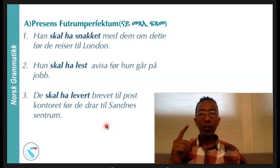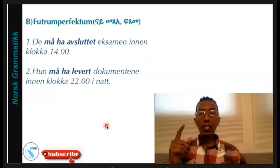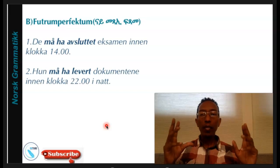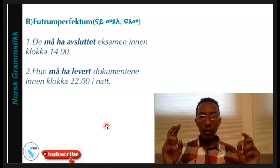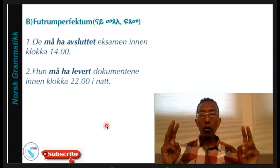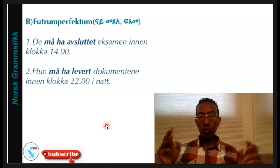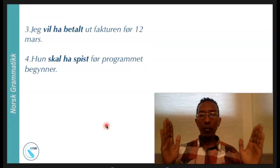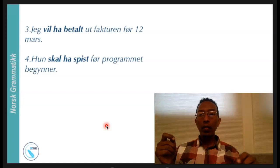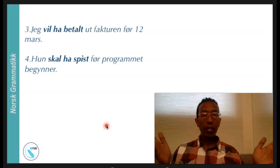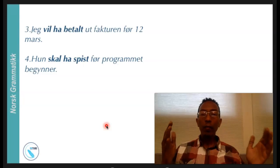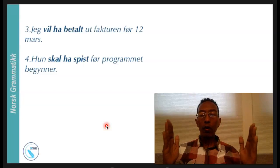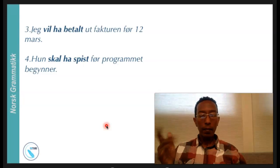This is one usage of present future perfectum in Norwegian grammar. The second usage is when you have a restricted time point. For example: 'De må ha absolutt gjort eksamen innen klokka to' — they should have finished the exam by two o'clock. Another: 'Man må ha levert dokumentet innen klokka to.' A third example: they will have paid the bills before 12 March. Also: she will have eaten before the program starts — maybe the program starts at nine, she eats around eight, and when the program starts she will stop. These are two things happening — she eats first, then the program starts — indicating restricted time.